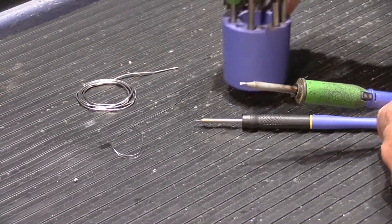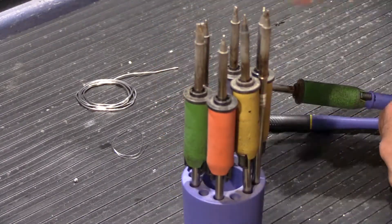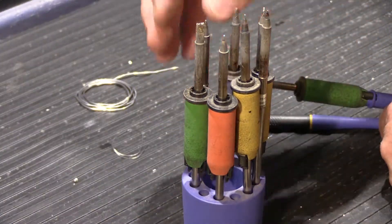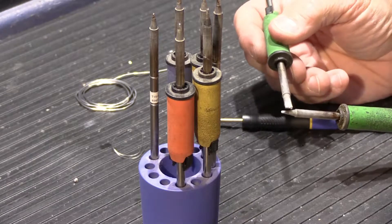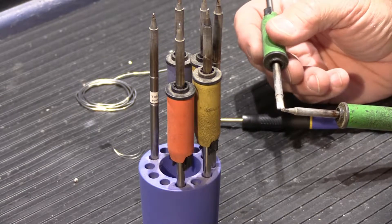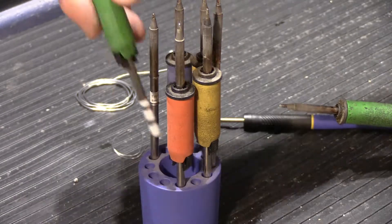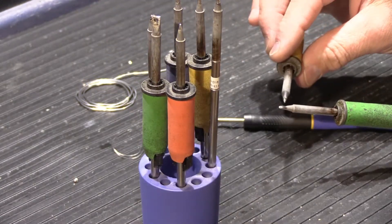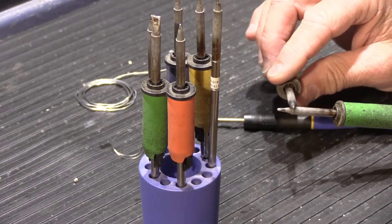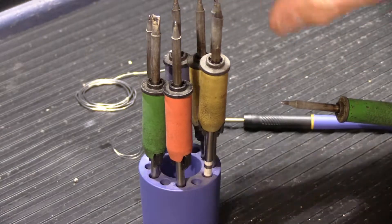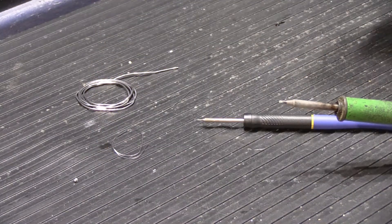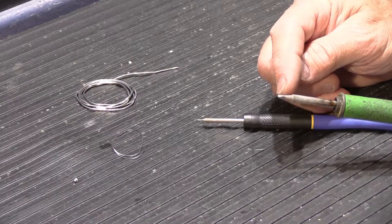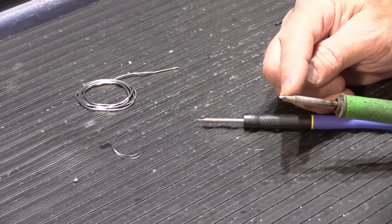The nice thing about the FX-951 is there are a lot of interchangeable tips. You can go all the way up to this really large chisel tip for larger components. I do have a variety of conical tips. A lot of people don't like conical tips, but sometimes they come in handy. There's a wide variety of tips, but my 1.6 millimeter chisel tip is my go-to tip for most things.